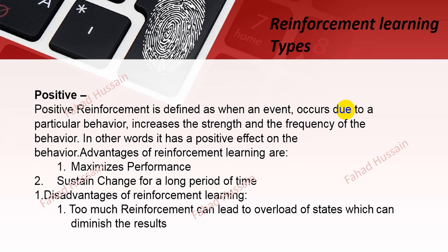There are different types of reinforcement learning: positive reinforcement learning and negative reinforcement learning. Positive reinforcement learning is defined as: when an event occurs due to a particular behaviour, it increases the strength and frequency of that behaviour — it has a positive effect on the behaviour. The advantage is that it maximizes performance and sustains change for a long period of time. The disadvantage is that too much reinforcement can lead to overload of states, which can damage the result.